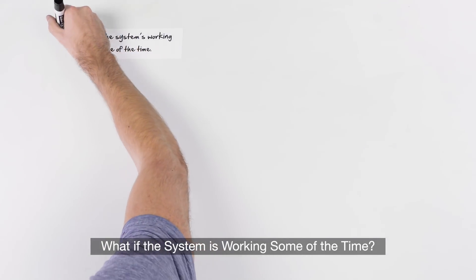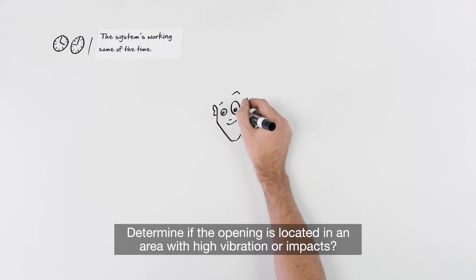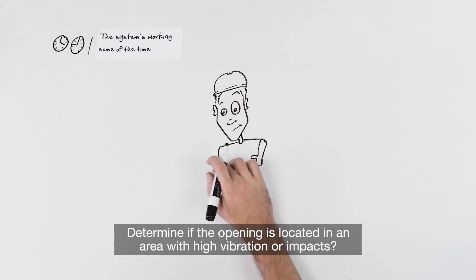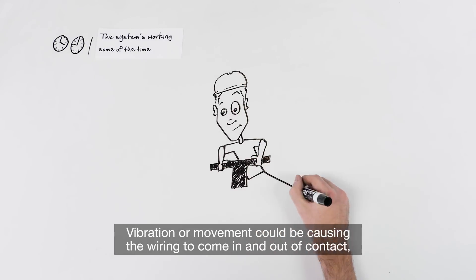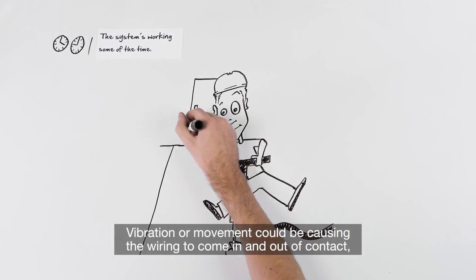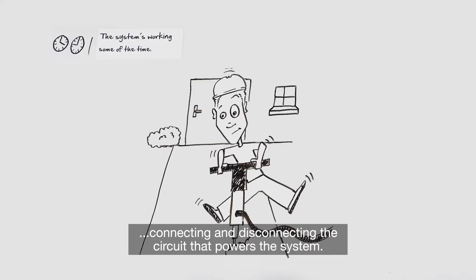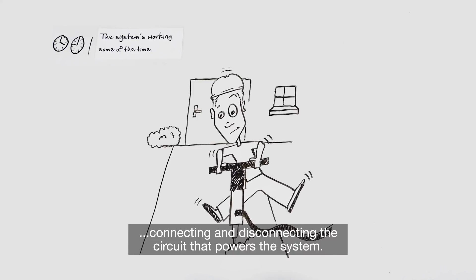What if the system is working some of the time? Determine if the opening is located in an area with high vibration or impacts. Vibration or movement could be causing the wiring to come in and out of contact, connecting and disconnecting the circuit that powers the system.